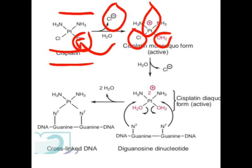In the second step, the second chlorine is also removed and another water molecule comes in its place. So two chlorine atoms are eliminated from the platinum, and two water molecules bind to the platinum. This species is called cisplatin diaqua form — it is the active form. This active form is responsible for binding to the N7 position of guanine. The water molecules are then eliminated and platinum binds to the DNA.